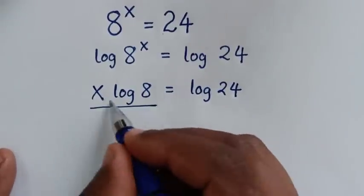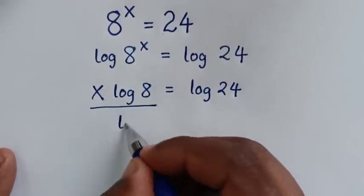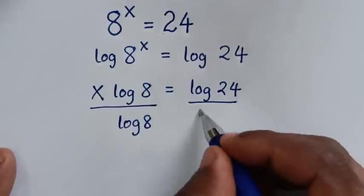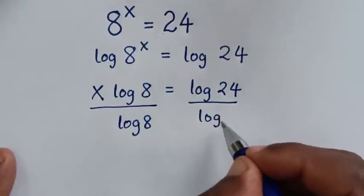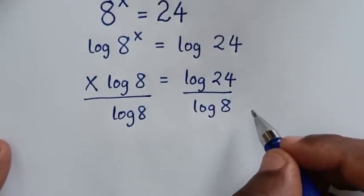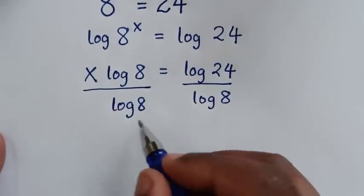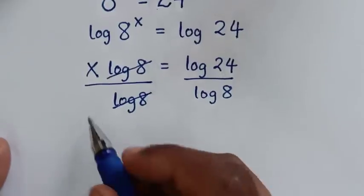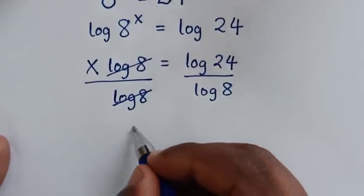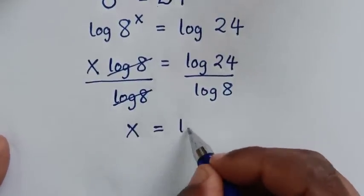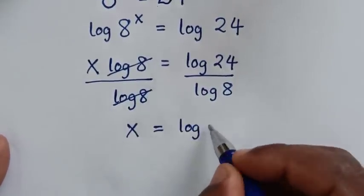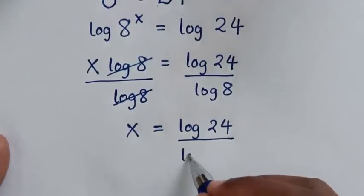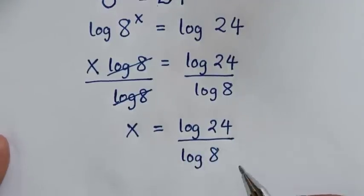Then we'll divide by log of 8 on both sides. This log of 8 will cancel this log of 8, and it will be x is equal to log of 24 over log of 8.